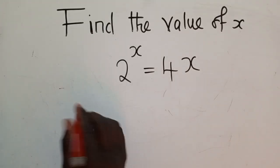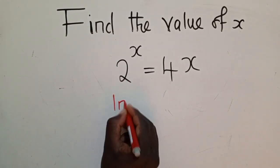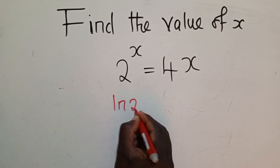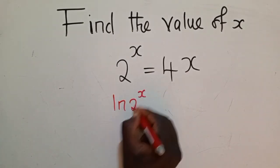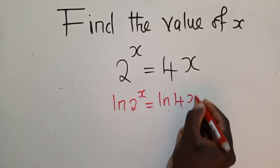Okay, so solving this, the way I think it must be done, you must apply ln. You apply ln, 2^x or 2 power x is equal to ln 4x. Natural log of 2^x is equal to natural log of 4x.